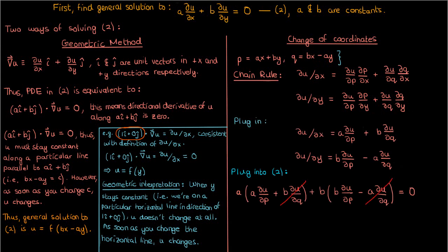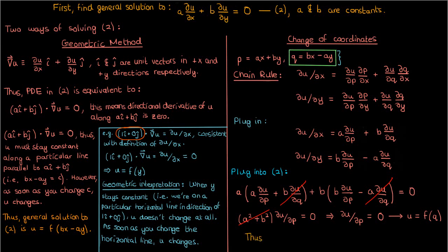Plugging into our PDE in equation 2, we can cancel terms and simplify. Since a squared plus b squared is always positive — except for the trivial case where both a and b are zero — we can cancel it out, leaving the partial of u with respect to p equals 0. Integrating once, u is just a pure function of q. Substituting back the expression for q, the solution is u equals a function of bx minus ay, which agrees with the geometric method.